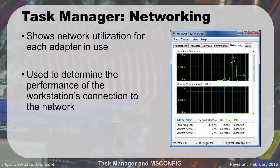The Networking tab shows the network utilization for each adapter. Most computers have one adapter, but you may have both a wired and a wireless adapter, or on a server, four adapters for more throughput. If you're constantly pegged high on your network, you may want a better adapter. For example, if you're on wireless B at only 11 megabits per second and constantly maxed out, it may be time to upgrade to wireless N or wireless AC at 100 to 300 megabits per second to decrease the bottleneck. The goal is always to find and improve the bottleneck for better system performance.